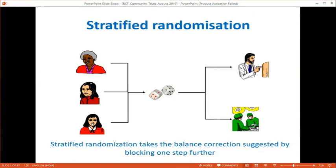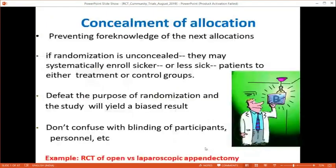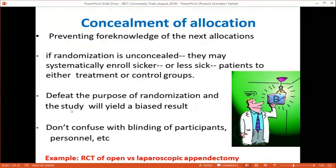Stratified randomization — for example by age groups (young, middle-aged, elderly women) — takes blocking one step further. Allocation concealment means preventing foreknowledge of the next allocation, so the primary investigator cannot selectively assign sicker patients to the treatment group. The investigator tells the patient: 'I don't know what you will get — 50% chance of placebo, 50% chance of drug — and even I will only know at the end of the trial.' This prevents selection bias. Do not confuse allocation concealment with blinding, which comes later.